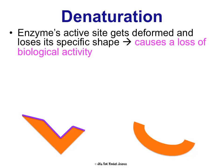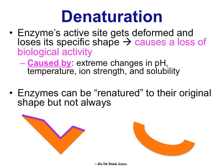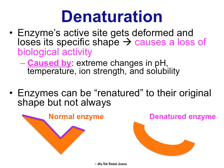Denaturation is when an enzyme's active site gets deformed and it loses its very specific shape, causing a loss of biological activity — it won't be able to do what it was designed to do. This can be caused by extreme changes in pH, temperature, ion strength, solubility, and other environmental factors. Sometimes enzymes can be renatured and go back to their original shape, but that's not always possible.